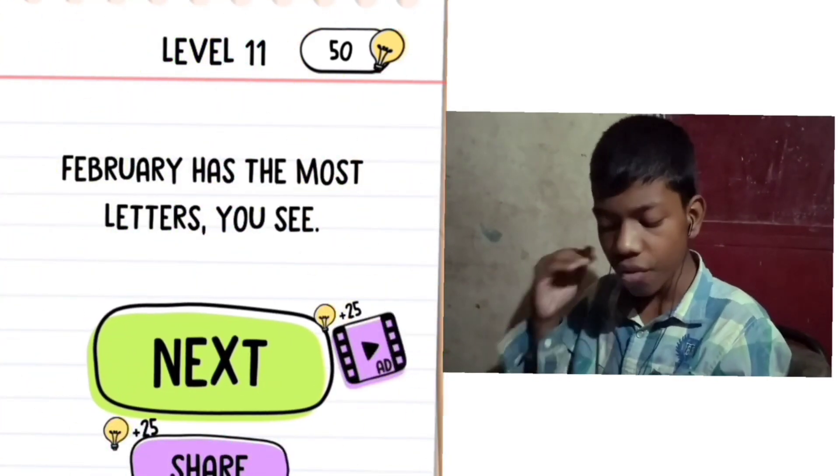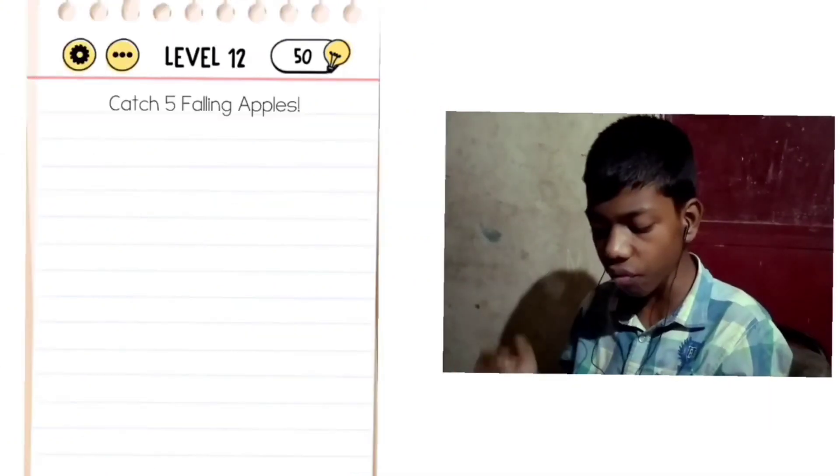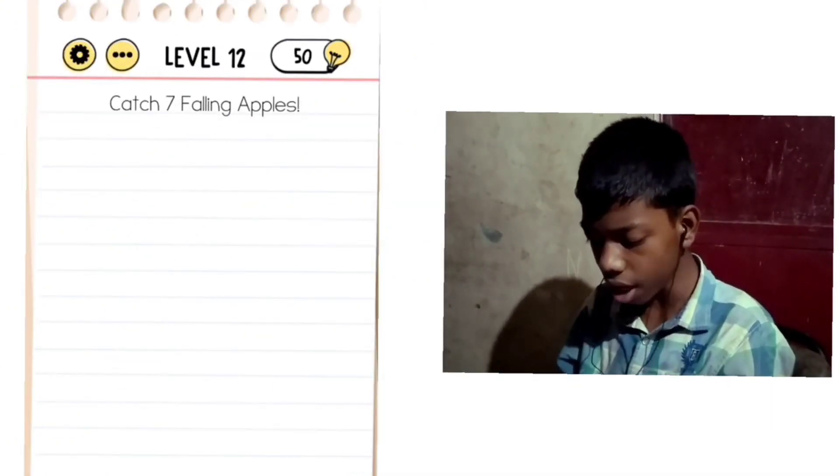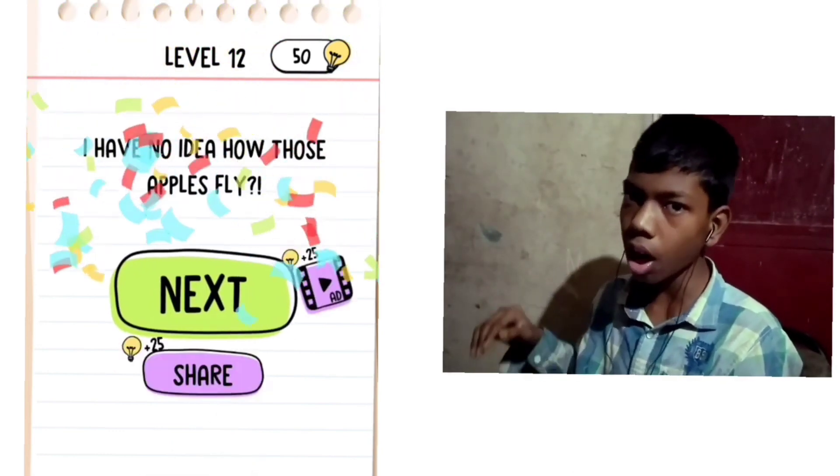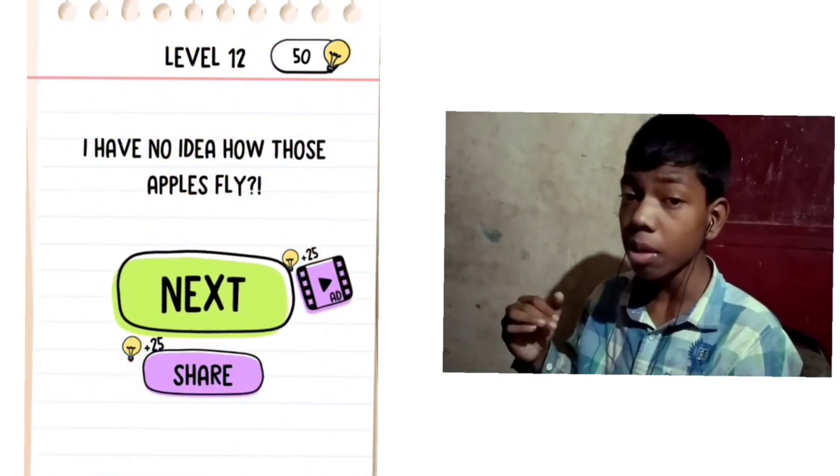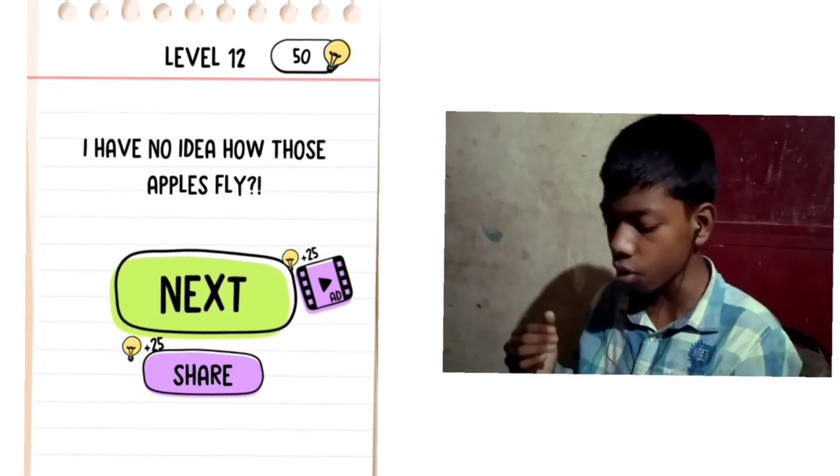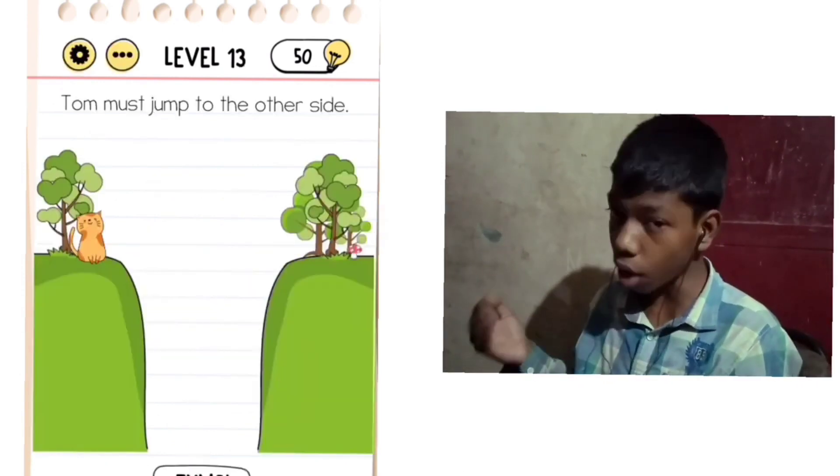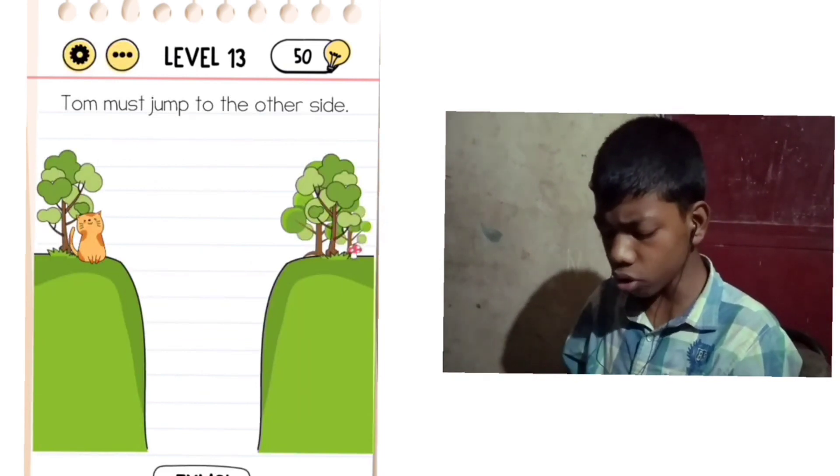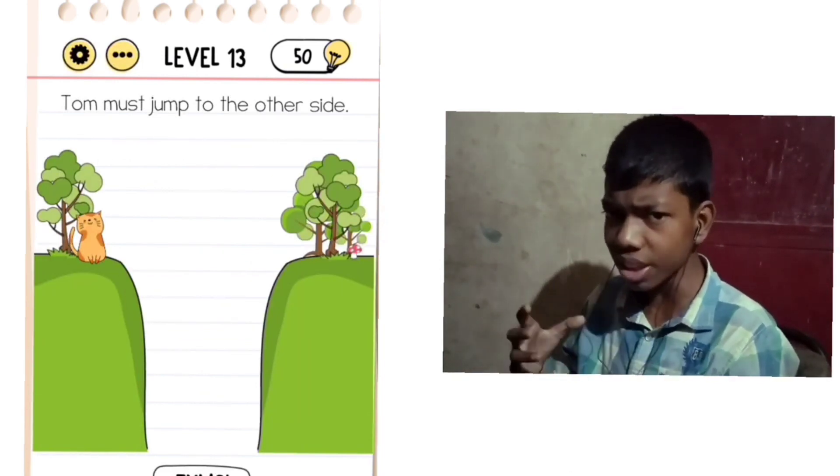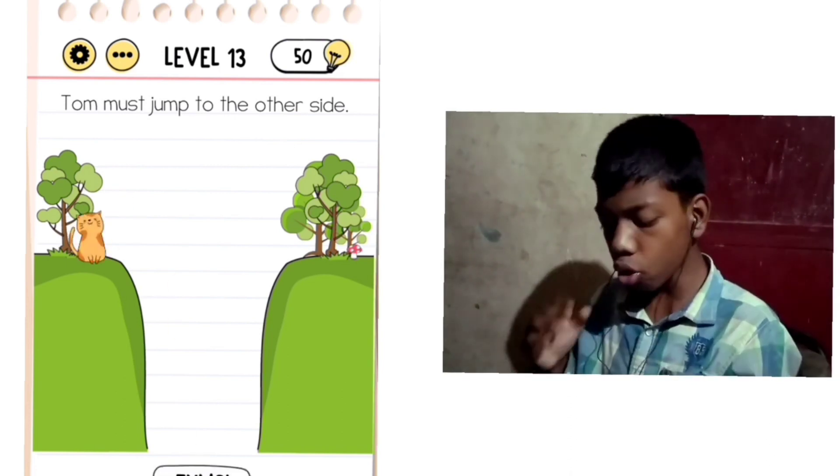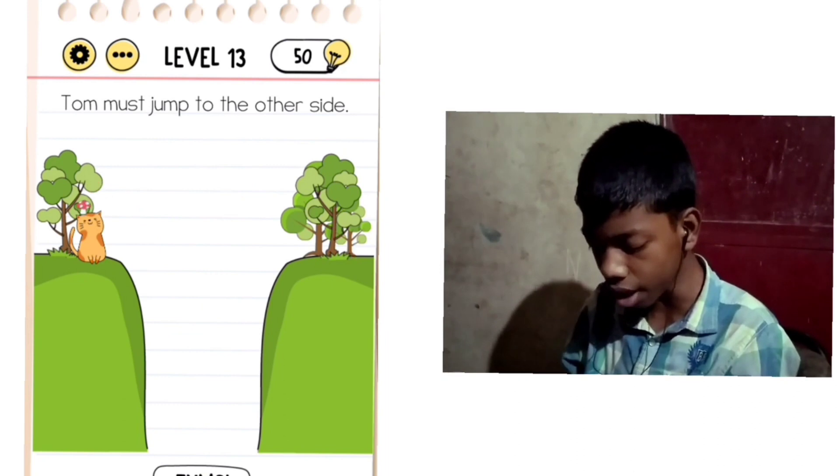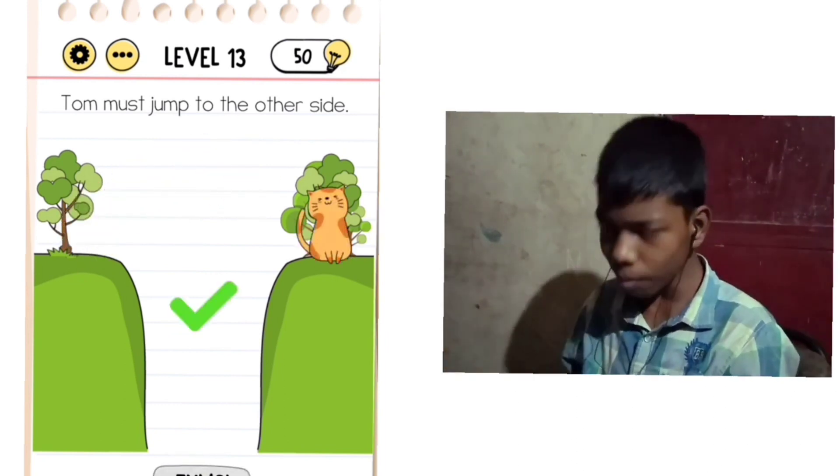Level 12: Catch the falling apple. Level 13: Jump to the other side. Here we have a cat called Tom and we have to jump. There are two islands here with a lot of difference between them. We have to make the bridge bigger by holding it down, so the mushroom will be big. It's a different logic in the game.